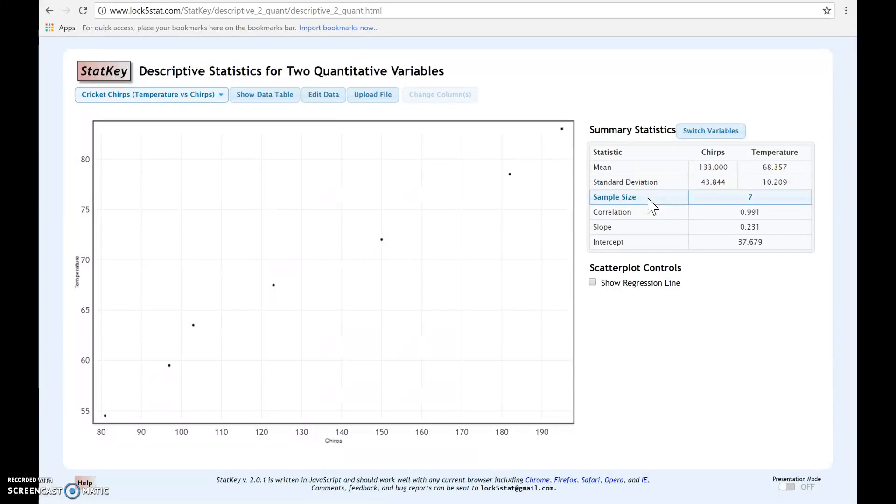Remember, the sample size is a good way to double check that the dataset was entered correctly. And if you'll recall from the cricket example, we did have seven data points. StatKey is going to calculate the correlation for us, as well as the slope and the intercept.